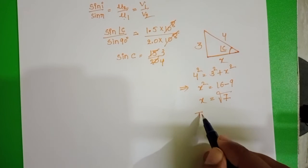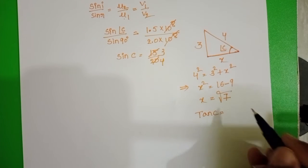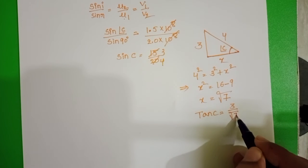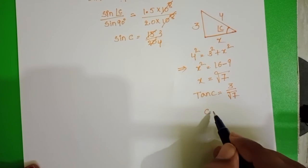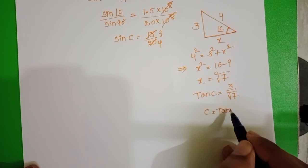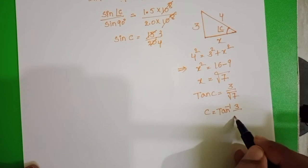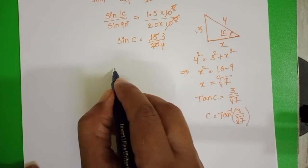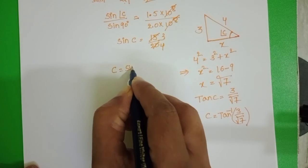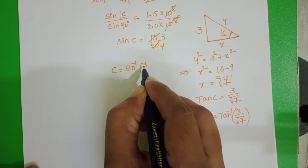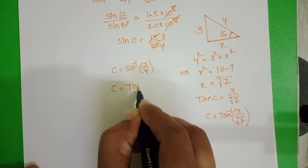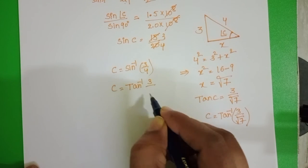So from this triangle, tan c equals opposite side by adjacent side, 3 by root 7. C equals tan inverse 3 by root 7. Critical angle c equals sin inverse 3 by 4, or c equals tan inverse 3 by root 7.